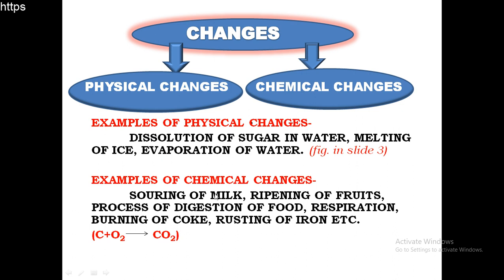For example, souring of milk: during souring of milk, lactose turns to lactic acid, which means a new chemical substance is formed. While ripening of fruits - many of you have heard about ethylene gas used in the ripening process of bananas. Ethylene gas combines with oxygen and leads to the formation of carbon dioxide and water. This carbon dioxide helps in the process of ripening. So here some chemical reactions are involved, and new substances are formed from ethylene to carbon dioxide and water.